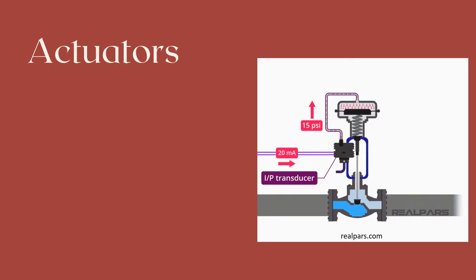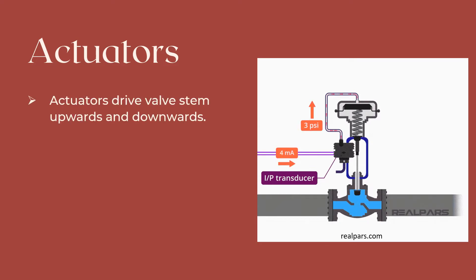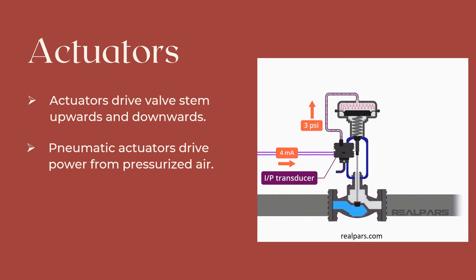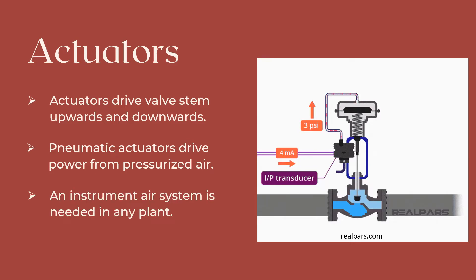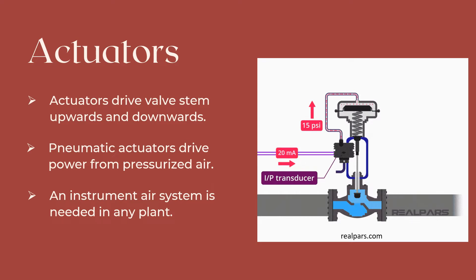So how is the control valve connected to the control loop? Control valves are equipped with actuators. Actuators move the valve stem upwards and downwards based on the signal received from the controller. Actuators are mostly pneumatic, which means they drive power for the valve operation through pressurized air. This means that any plant would need an instrument air compressor, receiver, and piping header to supply air to all control valves in the plant.